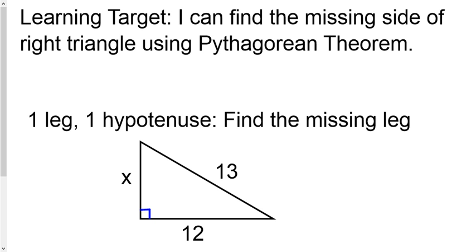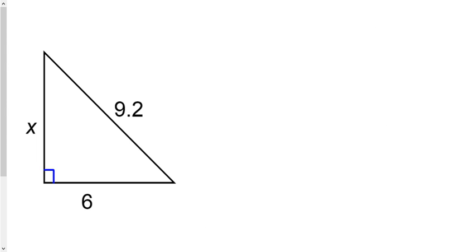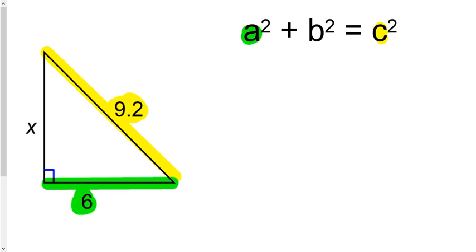Okay, this is the situation where they give you one leg and the hypotenuse, and you need to go find the missing leg. So for this triangle right here, we know that the 9.2 is going to be the hypotenuse, and so that would be the C value. The 6, well, that could be the A because it's a leg, or it could be the B.